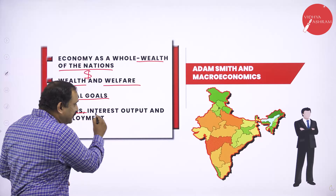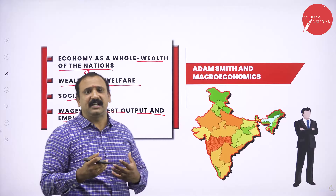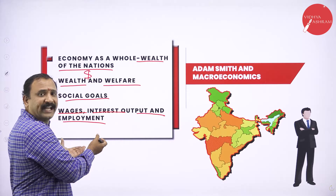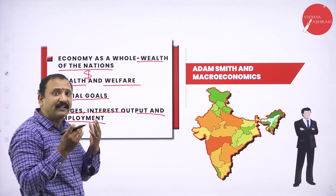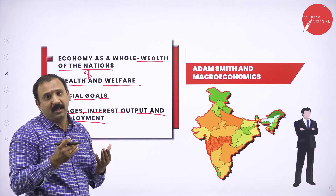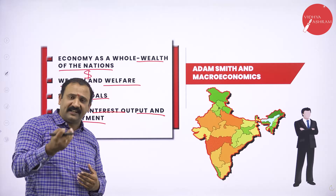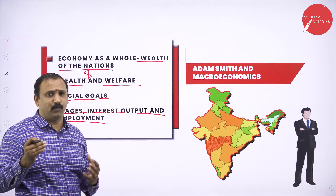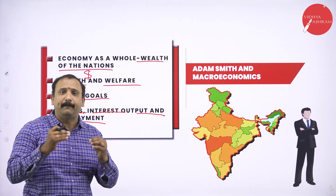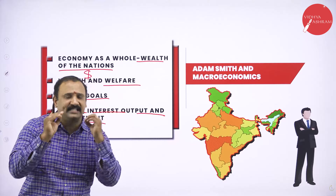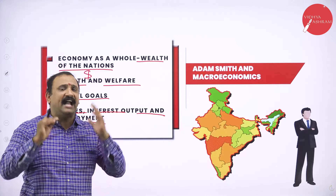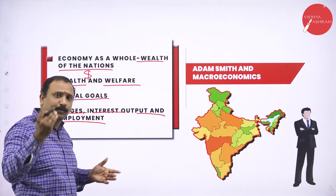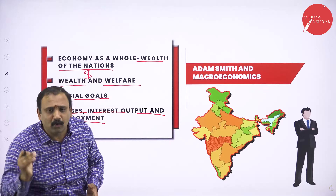Wages, interest, output, and employment — these are some factors we are going to learn in macroeconomics. In a country like India, what is the salary, at what rate do we pay salary, what is the interest rate, what is the production rate? All these factors are a very big question because people are interested to know. Everybody is being paid at a particular level based on their skill, ability, experience and knowledge. The concept of wages, interest, and how much output and production is being determined are all a very big macro concept put together.